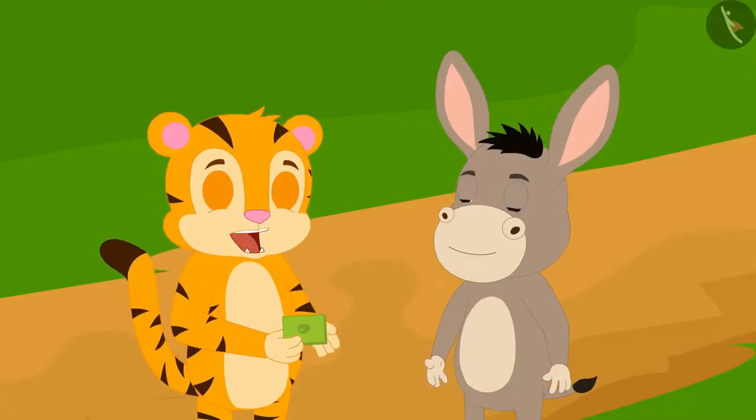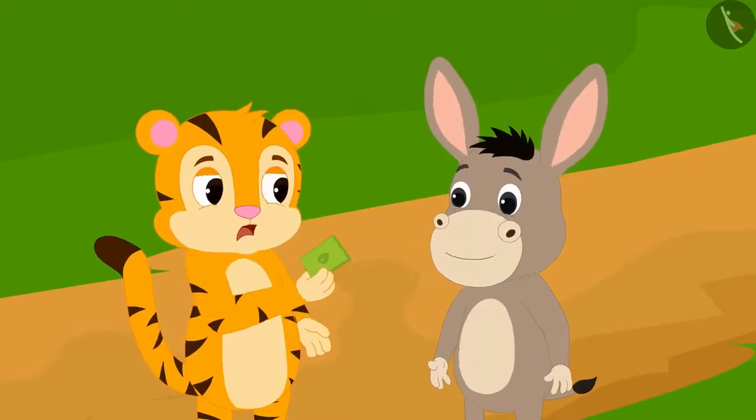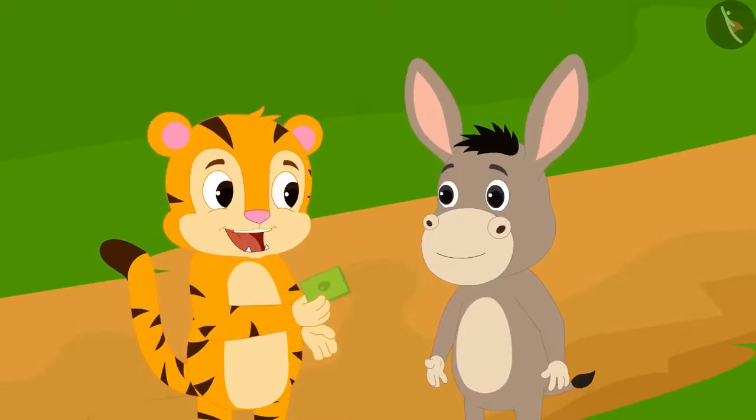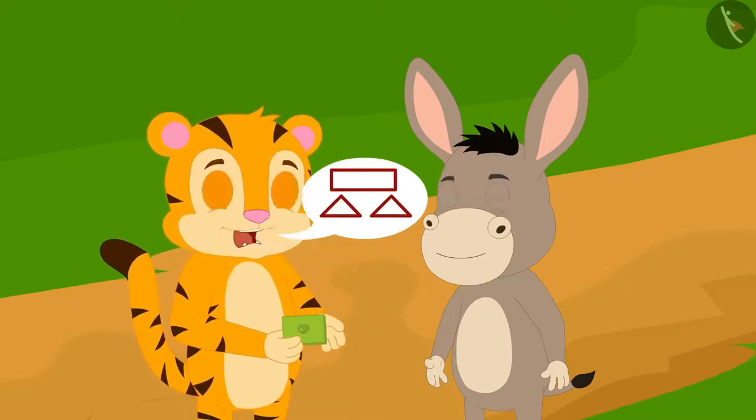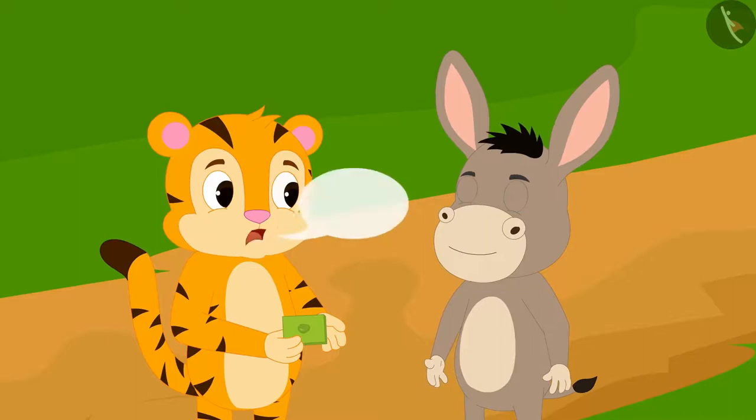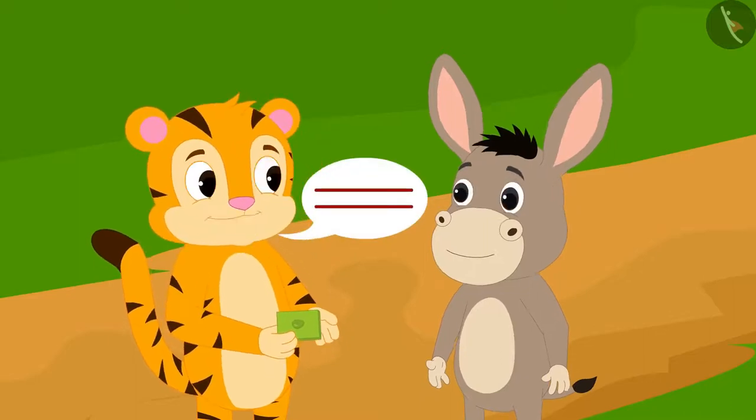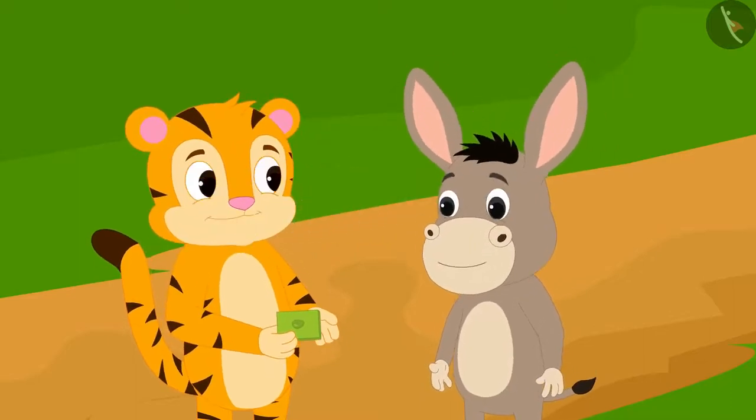Never mind Bholla, you won't be able to answer my second riddle. Can you divide this pistachio barfi into a rectangle and two equal area triangles by drawing two lines? Sher Khan asked Bholla.